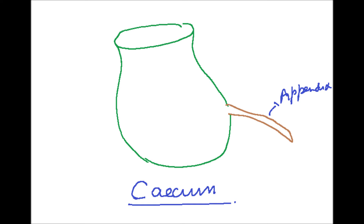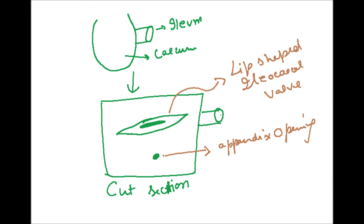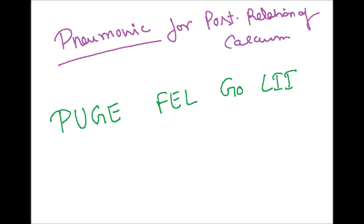After the ileum, the intestine is attached to the cecum through the ileocecal valve. On the posterior medial part of the cecum lies the appendix, and the ileum opens into it via the ileocecal valve, which is a lip-like structure.